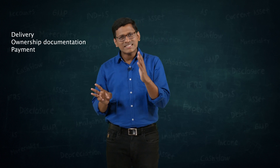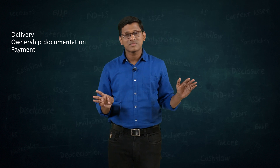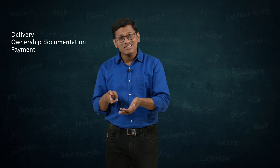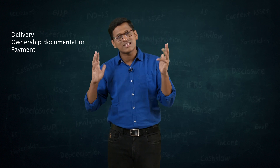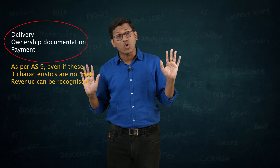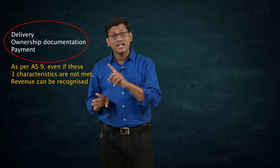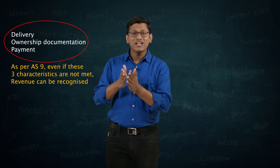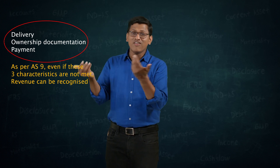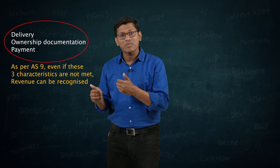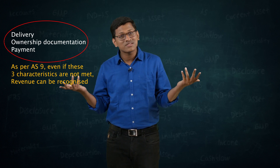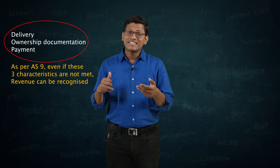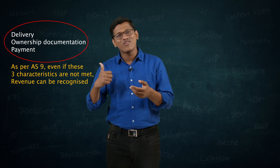But accounting standard talks about something fantastic. You may or may not have these three things, and still it can be considered as transfer of risk and reward. For instance, regarding delivery — even in the rice example, the goods were still not delivered to the buyer; they were still in the shop. Yet we said risk and reward is transferred, and it is revenue for the seller. So delivery is not always a condition.